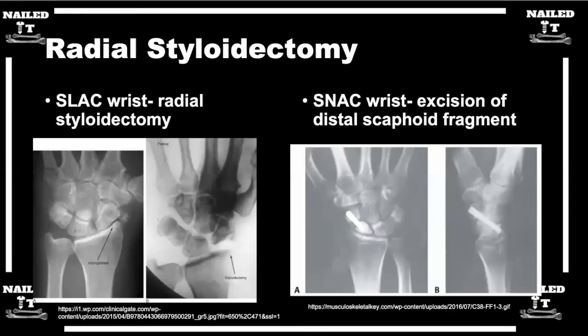Looking at the images, you can see the SLAC wrist with styloidectomy. The problem is if you don't reconstruct the SL ligament, it's not really going to help much. So generally, my approach is both radial styloidectomy and SL reconstruction, because you can't do a direct repair after this long. If you just do the radial styloidectomy, you haven't really stopped the progression — though recovery is quick and easy and doesn't change motion much.